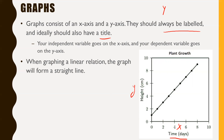Your independent variable goes on the x, and your dependent goes on the y — not a huge surprise. When graphing a linear relation, the graph will form a straight line. If it doesn't form a straight line, you don't have a linear relation. So if you have a linear relation, it's going to be a straight line.